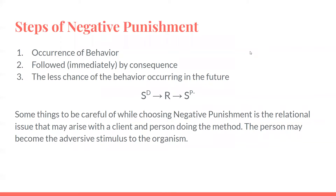Here are the steps of negative punishment. There is the occurrence of behavior followed immediately by a consequence — or as immediately as we can — and thus it has less chance of the behavior occurring in the future. Some things to be careful about are the relational issues that can arise with the client, and the person doing the method may become an aversive stimulus to the organism.